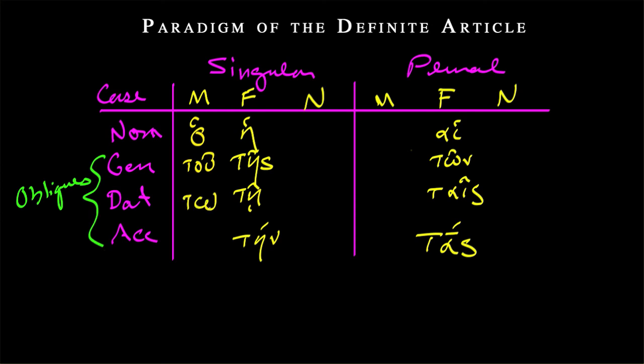And then in the accusative, we have ton. So you can see that here we had an eta kind of vowel working our way down.